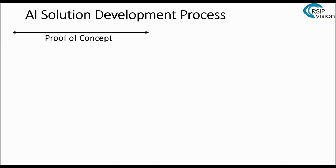Let me tell you about the way we work. We start with a proof of concept, because this industry is very far from standardization. So when you call me and tell me you need a solution for a particular process or application, I can't just tell you exactly how much it will cost or how long it will take, because it really all depends on your project. The proof of concept does two things: first, it enables us to show you what the technology can do before you need to make a commitment.